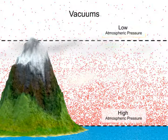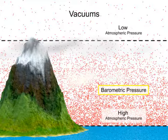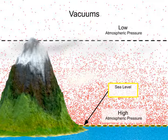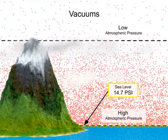The maximum force available from a vacuum is dependent on the barometric pressure at its location. At sea level, the barometric pressure is about 14.7 pounds per square inch under standard conditions.